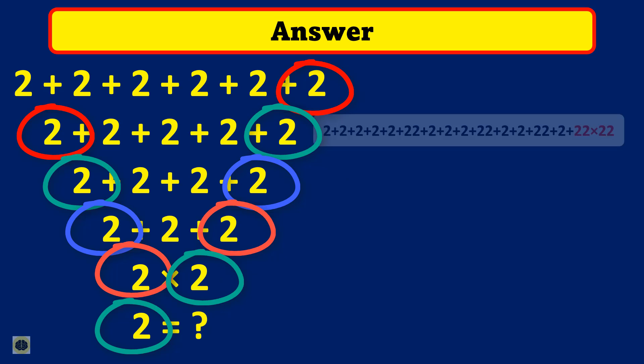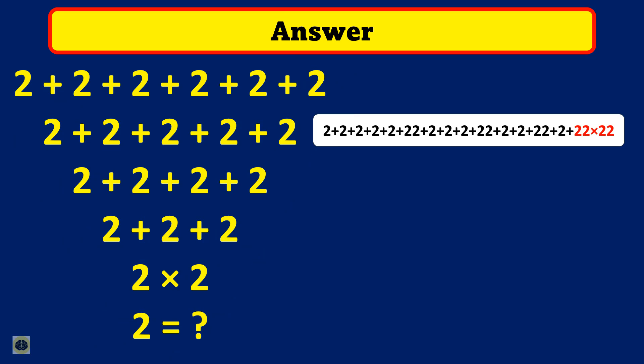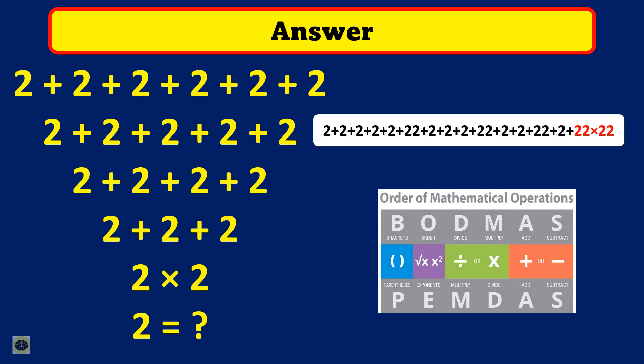The expression all on one line can be written like this. Let's now solve this expression according to BODMAS rule - multiplication to be performed first. Just for your information, BODMAS is a short form for Brackets, Of, Division, Multiplication, Addition and Subtraction. This is the order in which mathematical operations should be performed.